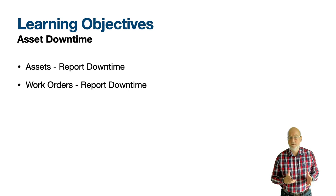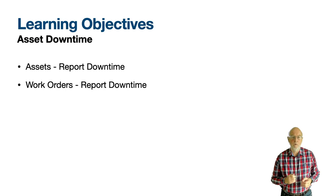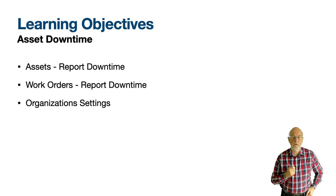There are slight differences between how it works on Assets versus Work Orders. There are two aspects to Asset Downtime: the changing of the Asset Up Down status and the reporting of Downtime. We'll see that the two do create the same records behind the scenes. There are some rules around how Downtime hours are calculated and we will be covering this. Finally we'll discuss a few settings in the Organizations application that affect the Work Order-based applications. So let's get started.